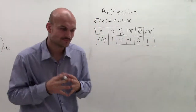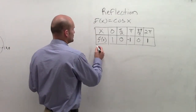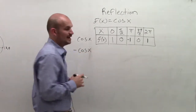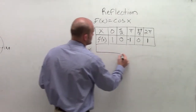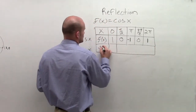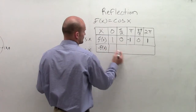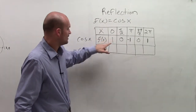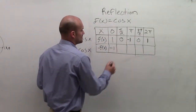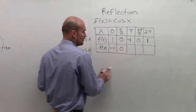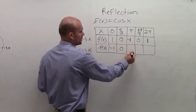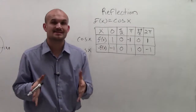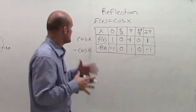Now let's see what happens if I multiply the cosine function by negative 1. This gives us negative f(x). At 0, we had 1 — times negative 1 gives negative 1. At pi over 2, 0 stays 0. At pi, negative 1 times negative 1 gives positive 1. At 3 pi over 2, 0 stays 0. And at 2 pi, we're left with negative 1. Each value has been totally negated.